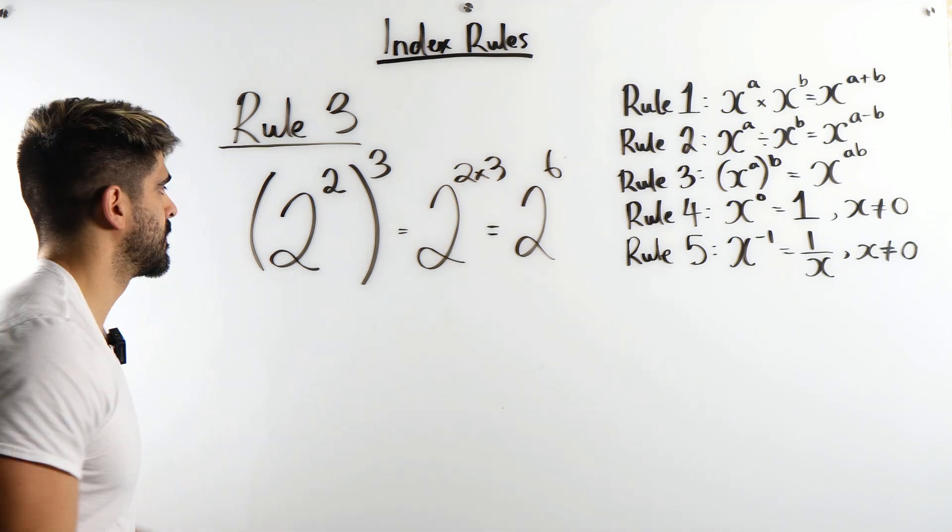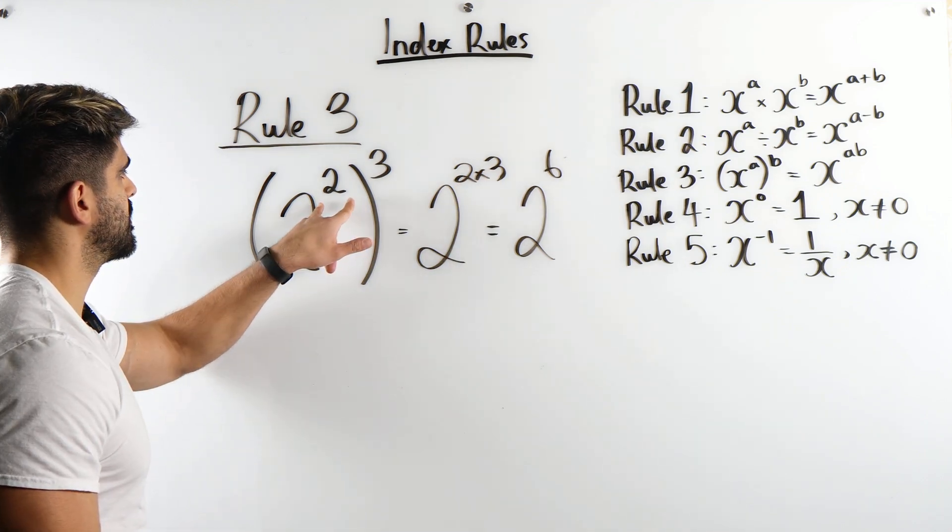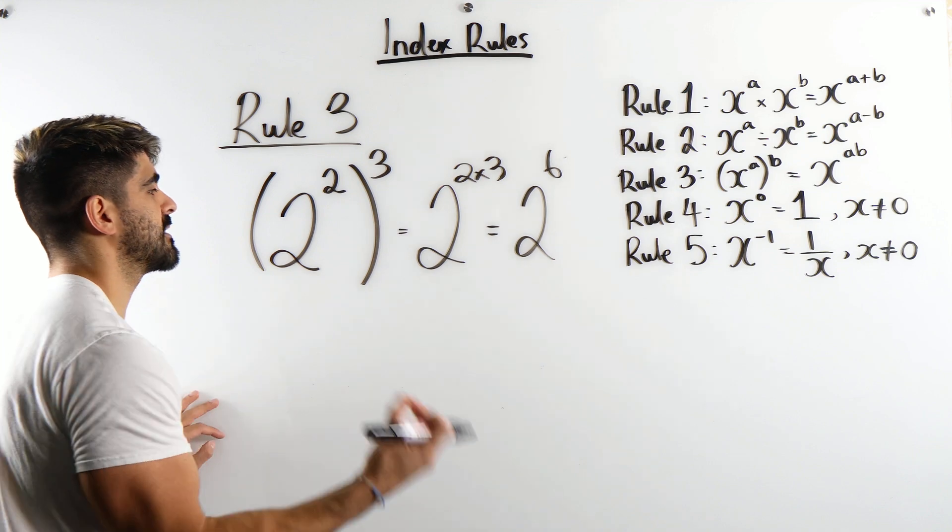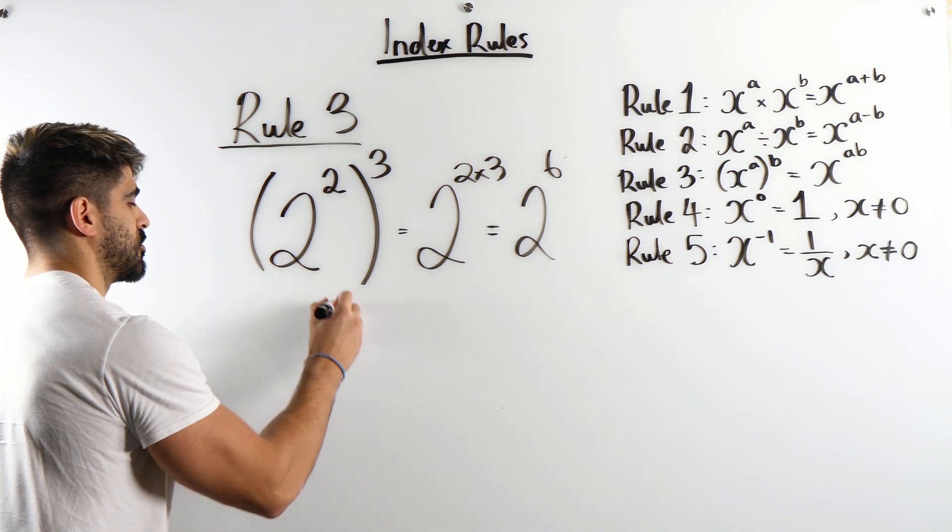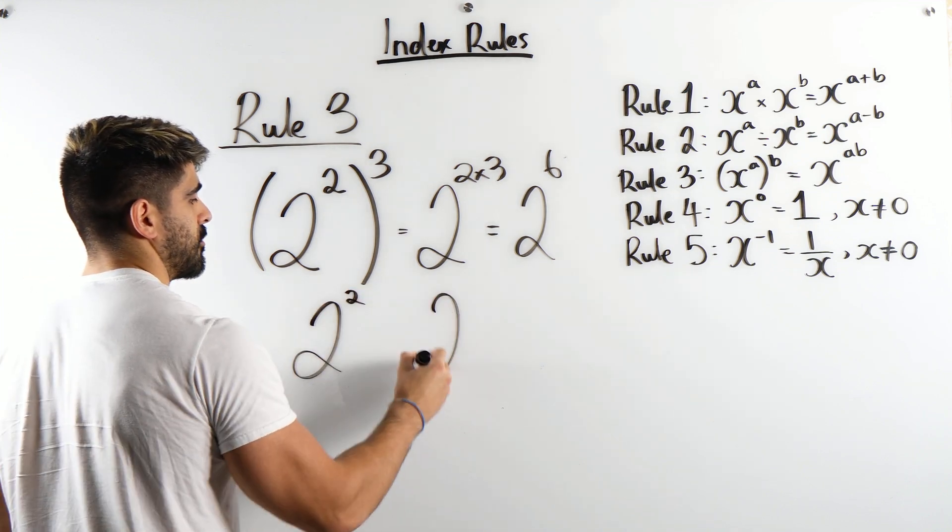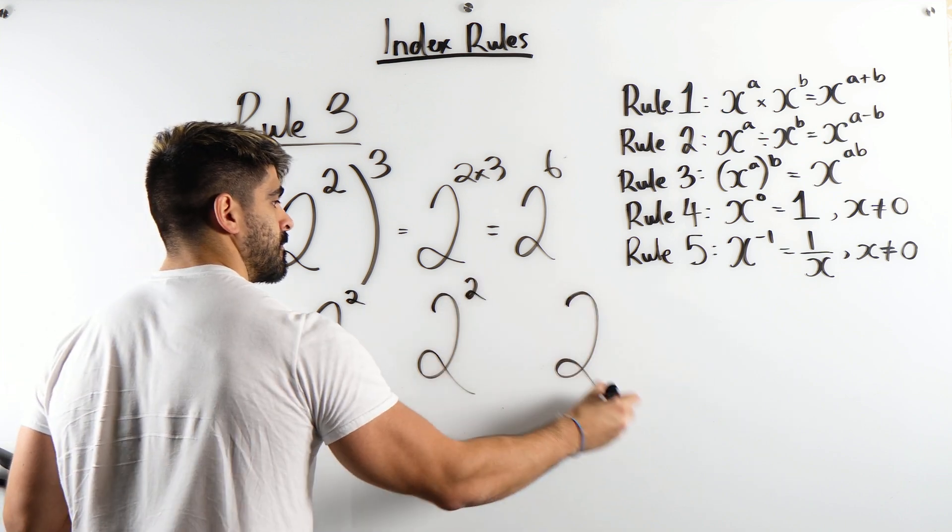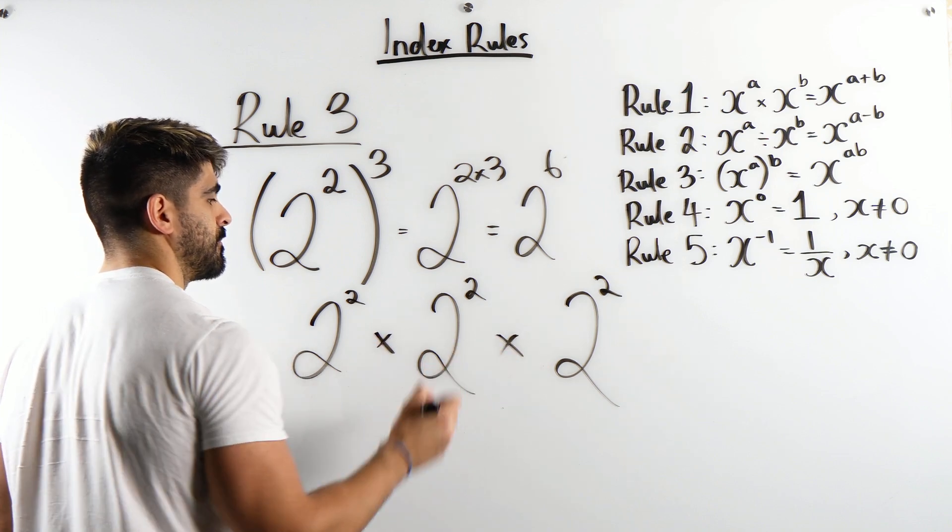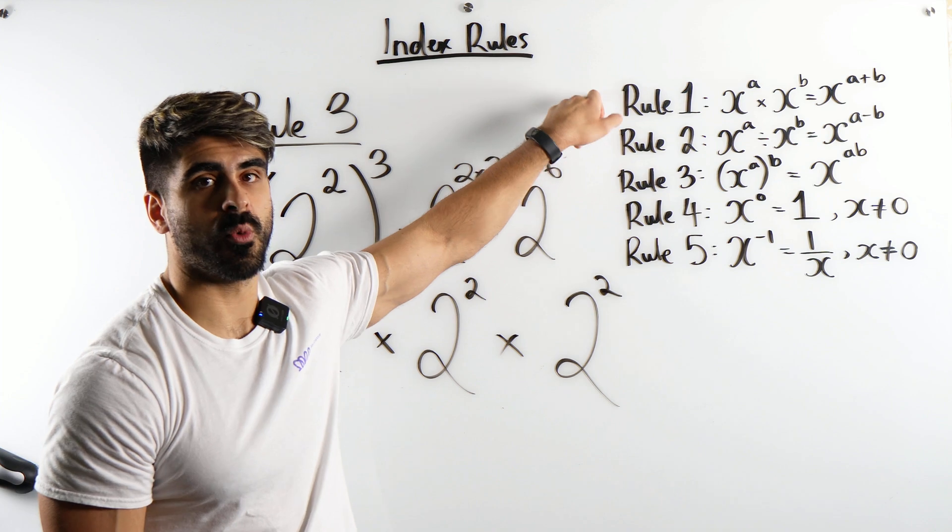Why is that? We're taking 2 squared and we are cubing it. Cubing means we're going to multiply this by itself 3 times. So I'm going to write 2 squared 3 times and I'm going to multiply them. That's cubing it, right? And here we can now use our rule 1.